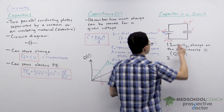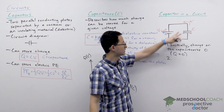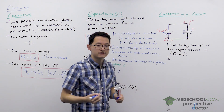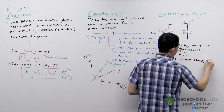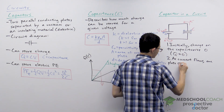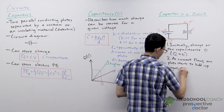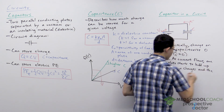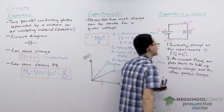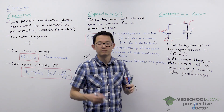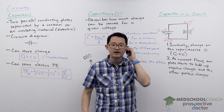As electrons build up on the bottom plate, the bottom plate accumulates negative charges. As electrons move towards the positive terminal, they leave the top plate of the capacitor, and as electrons leave, that plate builds up positive charges. So as current flows, one plate builds up negative charges and the other builds up positive charges. We can see how this starts to build up a potential difference — a voltage — across the capacitor.